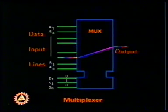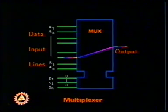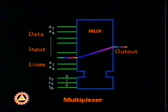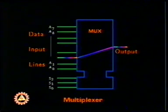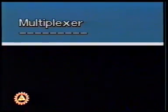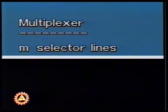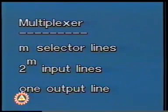A multiplexer has a number of data input lines A0 through A7, one output line, and a set of control or selector lines S0, S1, and S2. If the selector input is 010 — that is, decimal two — then the data from input number two appears at the output. In general, a multiplexer has M selector lines and 2-to-the-power-of-M input lines, but only one output line.